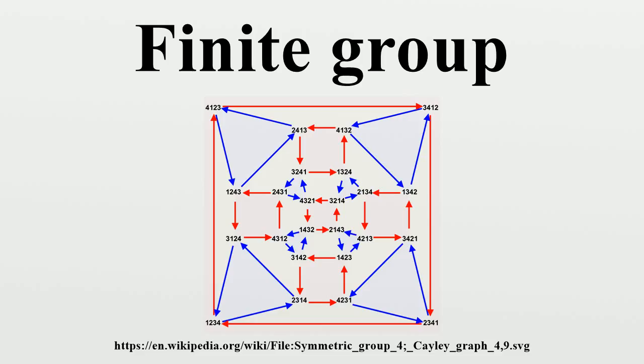Finite groups often occur when considering symmetry of mathematical or physical objects, when those objects admit just a finite number of structure-preserving transformations.